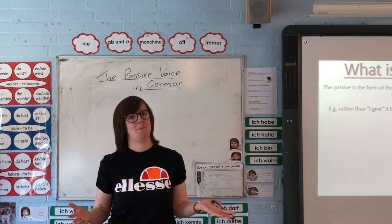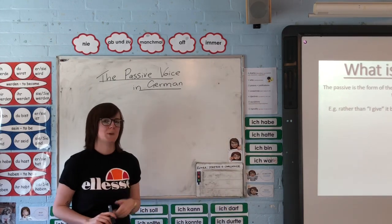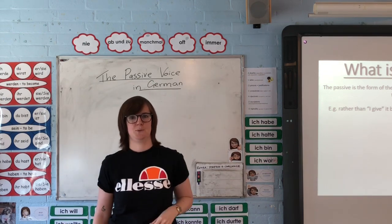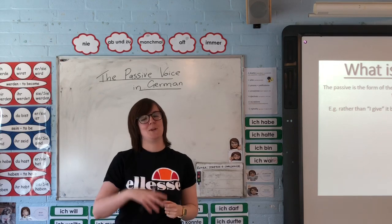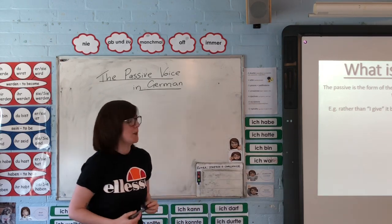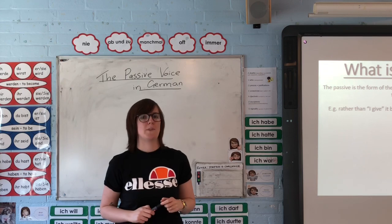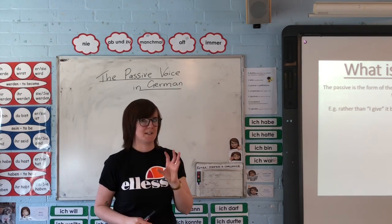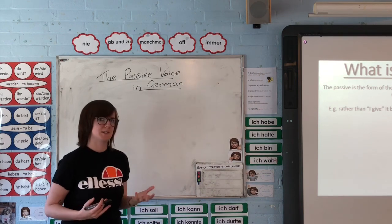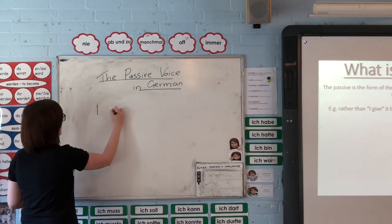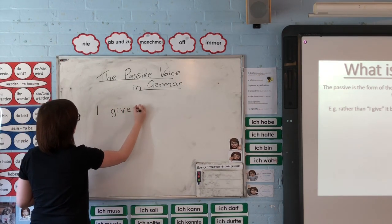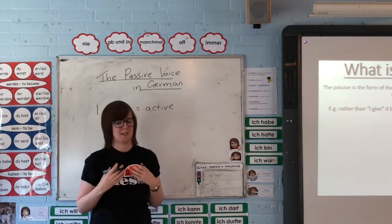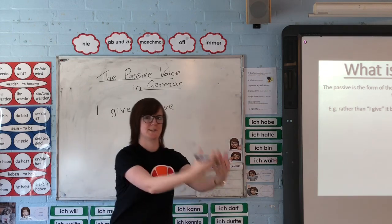First of all, what is the passive voice? We have it in English and we have it in German as well. We have two voices: the active voice and the passive voice. The passive voice is the form of the verb that is used when the subject of the verb is the person or thing that is affected by the action. So for example, 'I give' — this is active because I am the subject, I am doing the action, I am giving something.